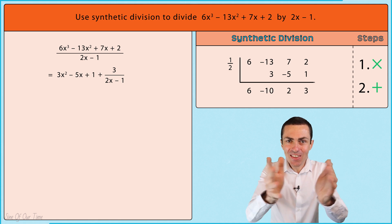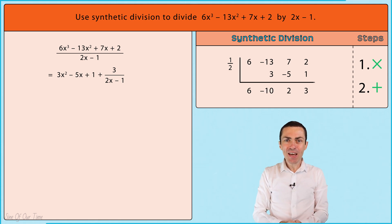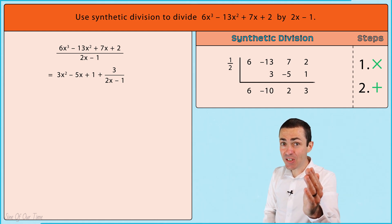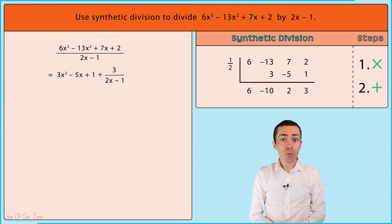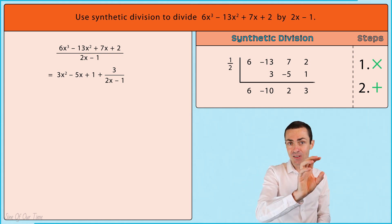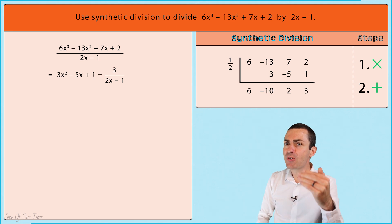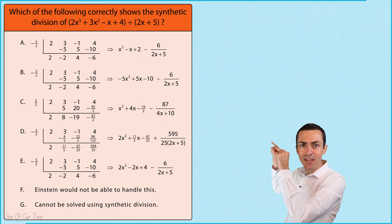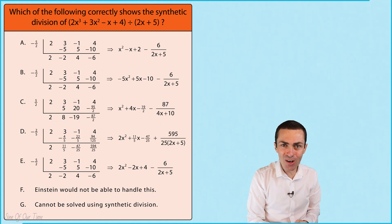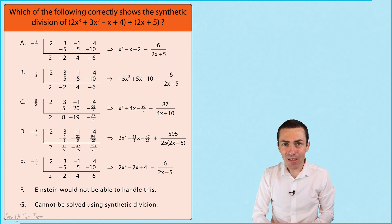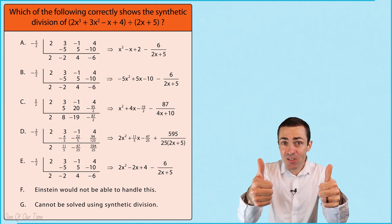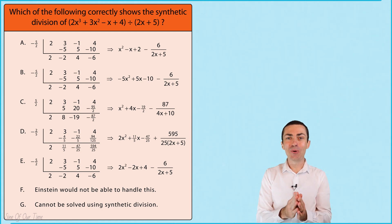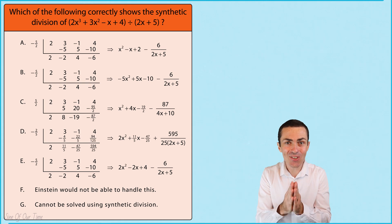Synthetic division works fantastically well when we have divisors of the form x plus or minus b, but as we have just seen, we can still make it work when a divisor is of the form ax plus or minus b — we just have to be mindful of those extra steps. Now why don't you practice by trying out this problem and letting me know your answer in the comments below? If you feel you've learned something valuable, please let me know. Thank you for watching.